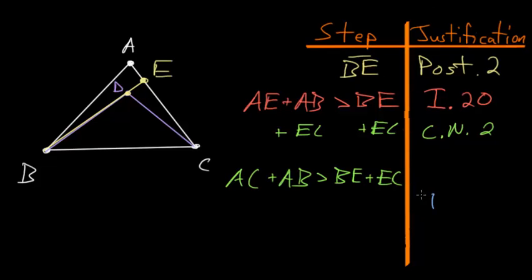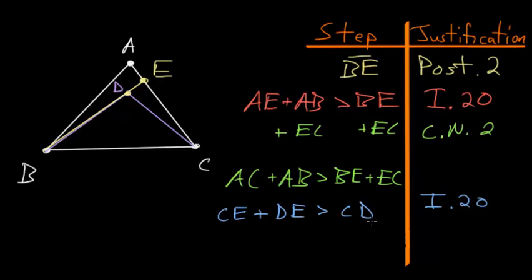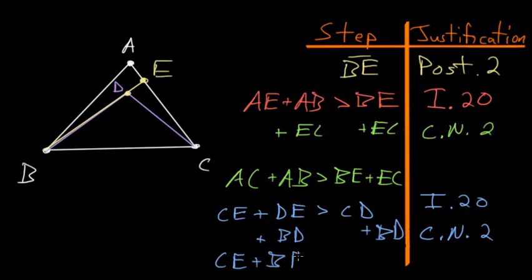So we now have that AC plus AB is bigger than BE plus EC. From here we can again use Book 1 Proposition 20, but now on a different triangle — triangle DEC — and we can show that side EC plus DE would be bigger than the third side CD. So let's write that: CE plus DE is bigger than CD. Again using Common Notion 2, we add side BD to each side of this inequality, and notice that BD plus DE is just equal to BE.